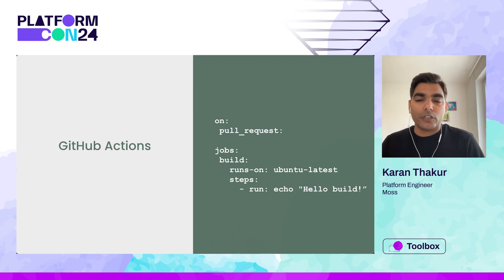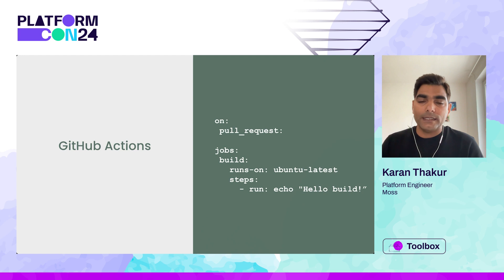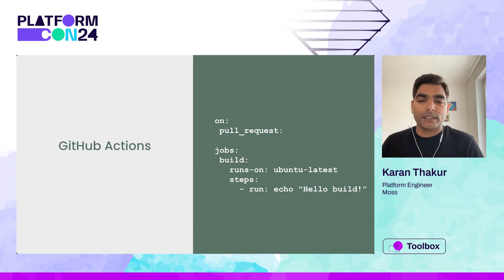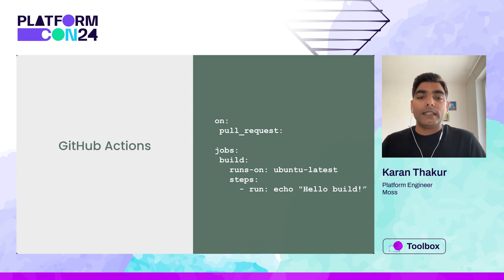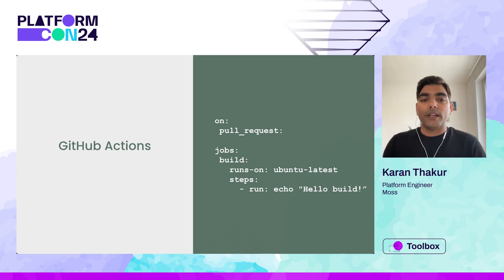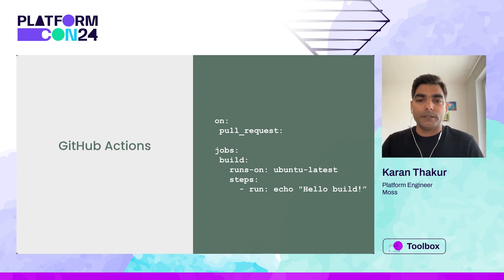We have defined a job — the job name is 'build' — which will run on ubuntu-latest, and then a step is defined which will just execute an echo statement of 'hello build'. It looks simple enough, but where are these steps executed? On entities known as runners. In the above example, the workflow runs on ubuntu-latest, and this is the flag which states to run the job on a GitHub-hosted Ubuntu machine.